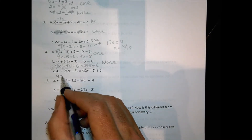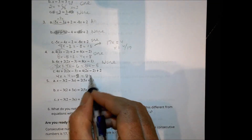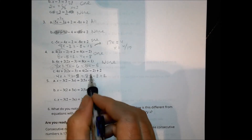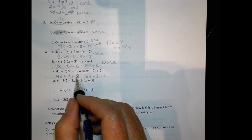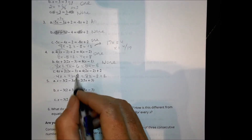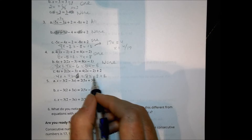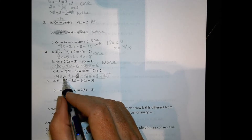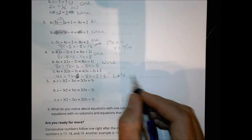For part C, we have 4x plus 4x minus 3 equals 8x minus 8 plus 2. The 8x terms go away on both sides. Two times negative 3 is negative 6, and negative 8 plus 2 is also negative 6. So everything matches — 8x equals 8x and negative 6 equals negative 6 — so we're going to have infinite solutions for that one.